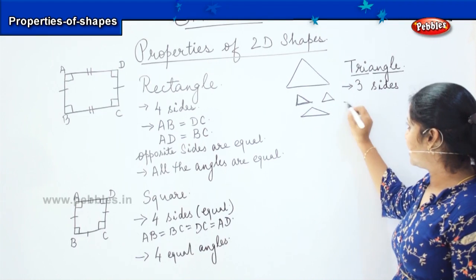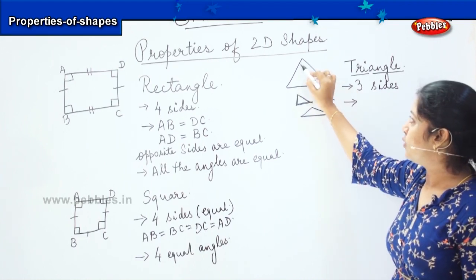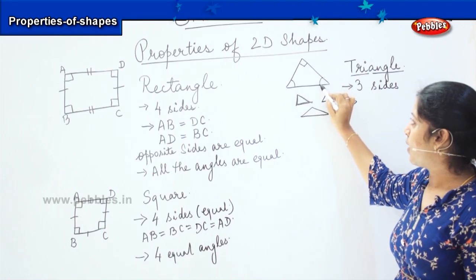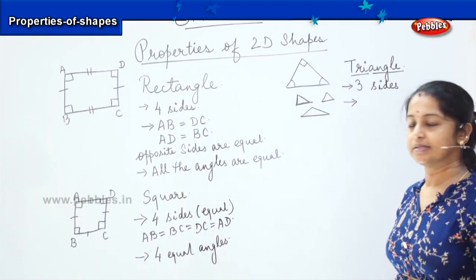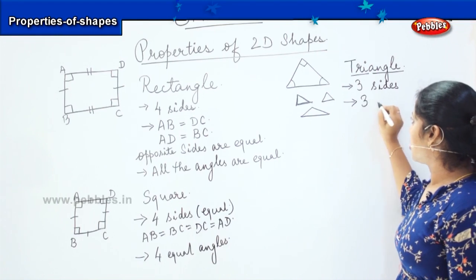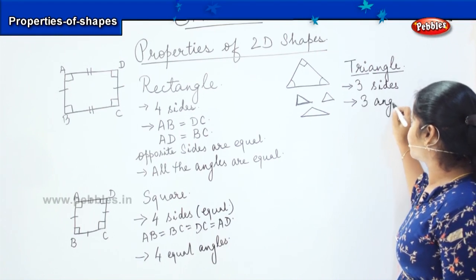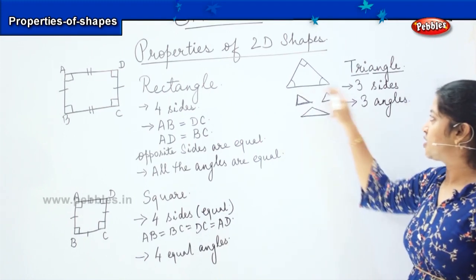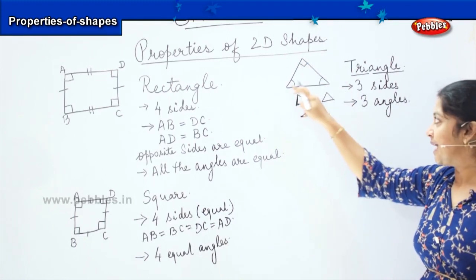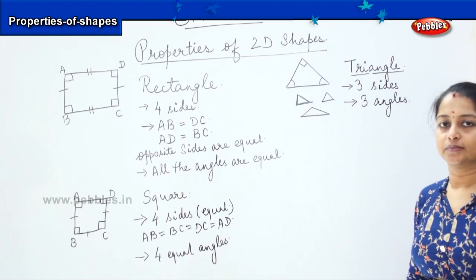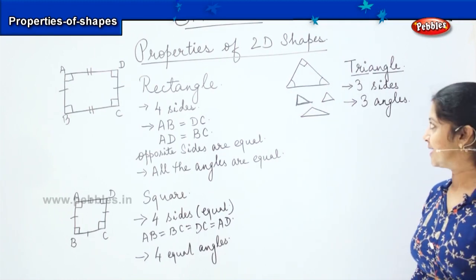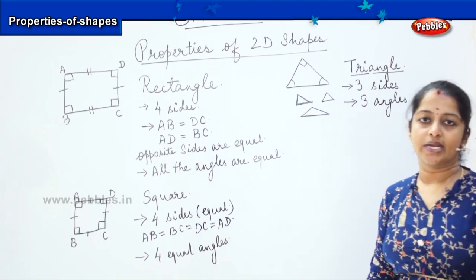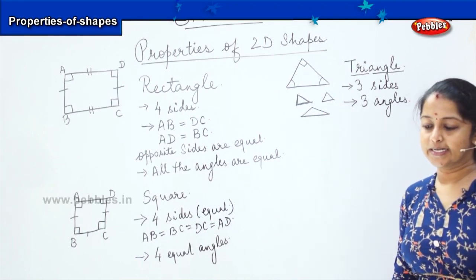How many angles does a triangle have? You have one angle here, one angle here, and one angle here — so a triangle has three angles. And it is also formed with straight lines. Can you see any curved line in the triangle? No. So a triangle is formed using three straight lines.